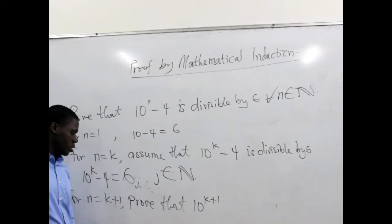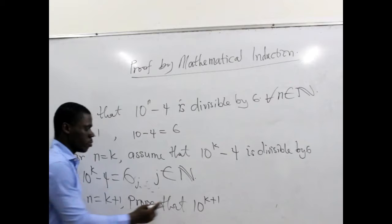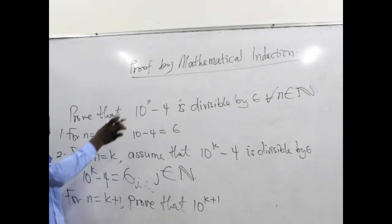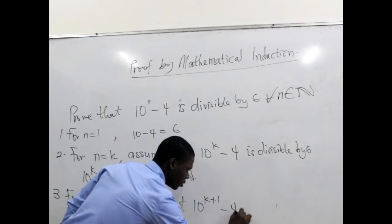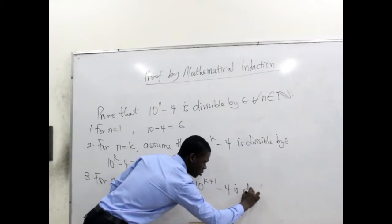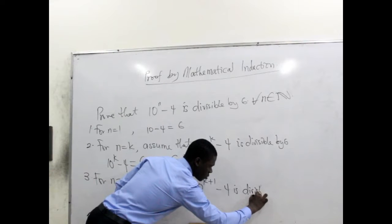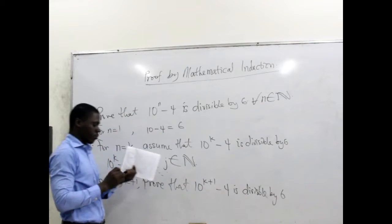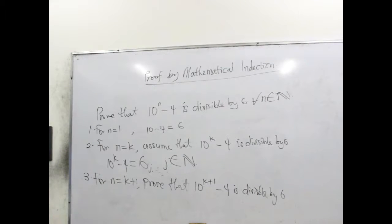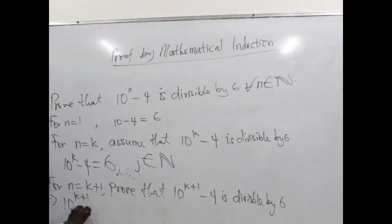because here we are looking at n equals k plus 1, so whenever we see n in the original expression we put k plus 1 minus 4 is divisible by 6.